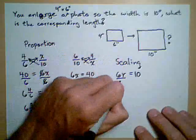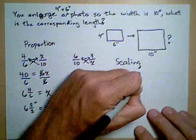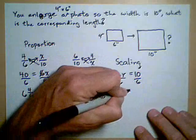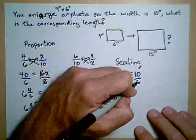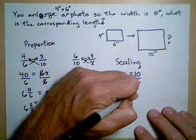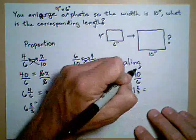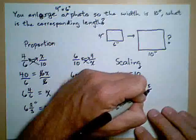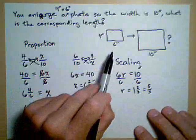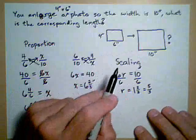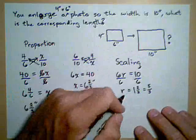We divide both sides by 6 to get our scaling factor. And we get R equals 10 sixths, or 1 and 4 sixths, or 1 and 2 thirds. Or we could also leave it as 5 thirds. That's our scaling factor from going from one photo to the other.